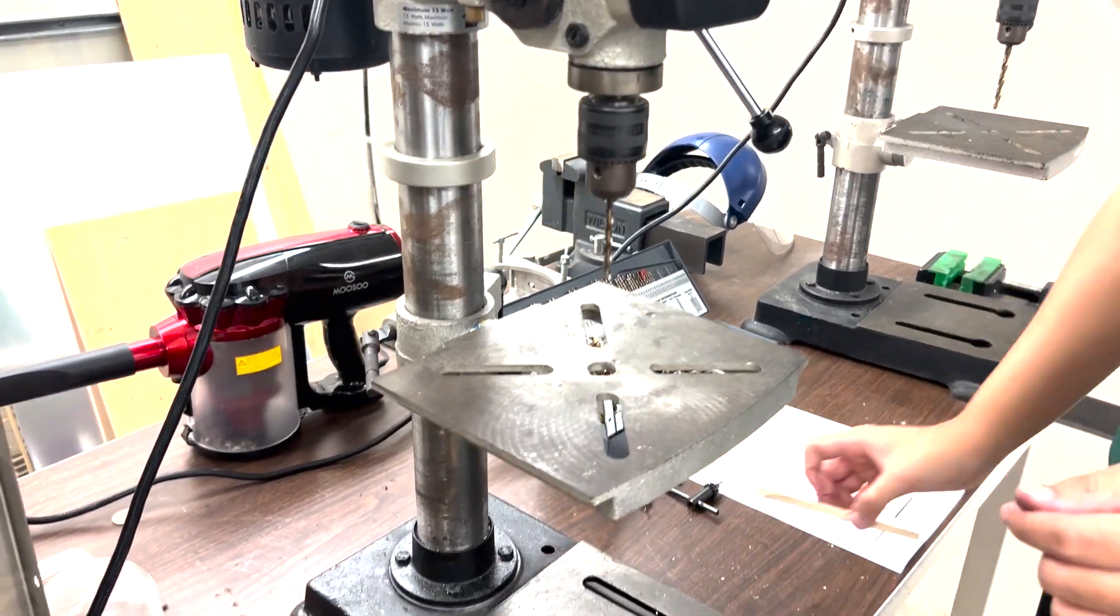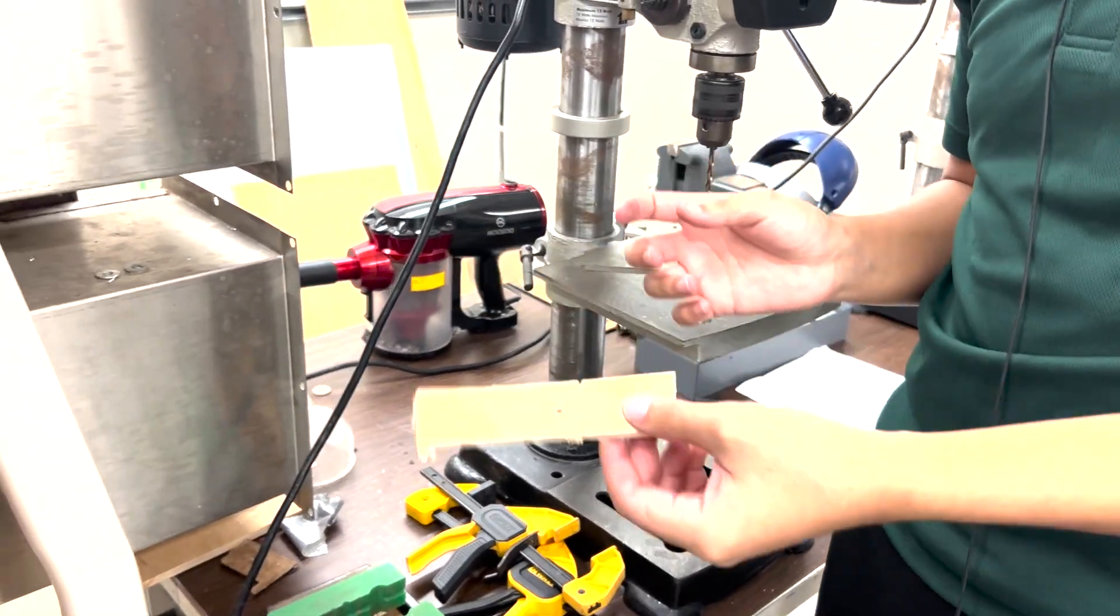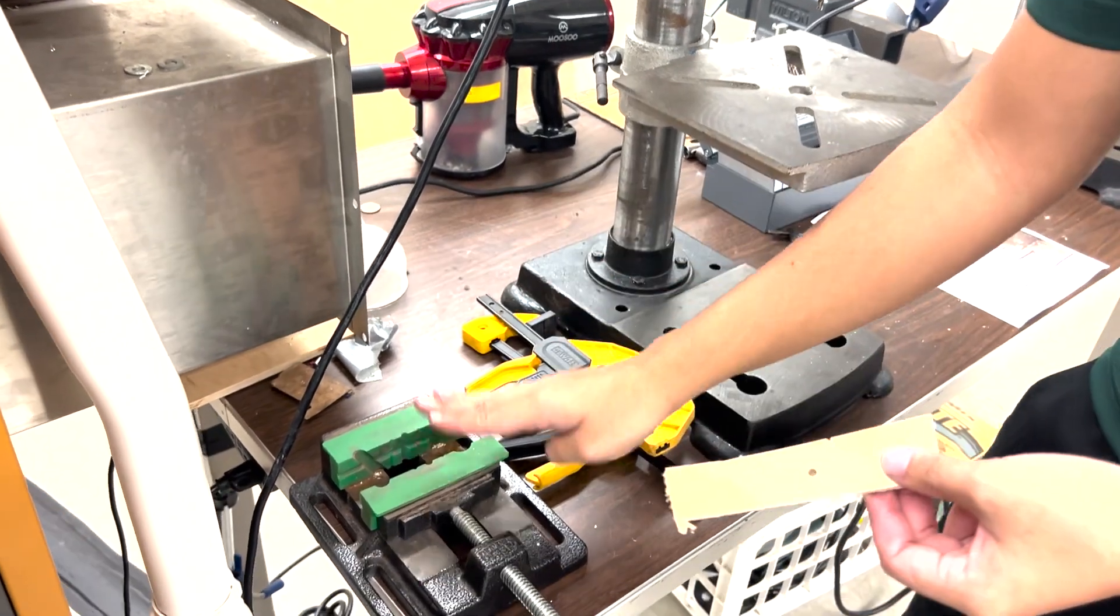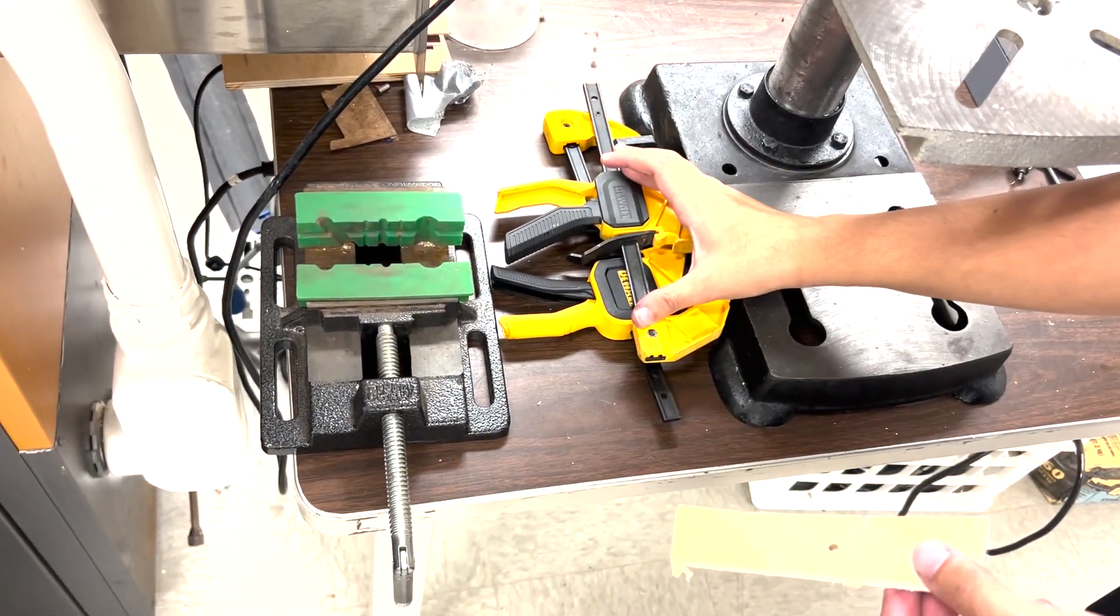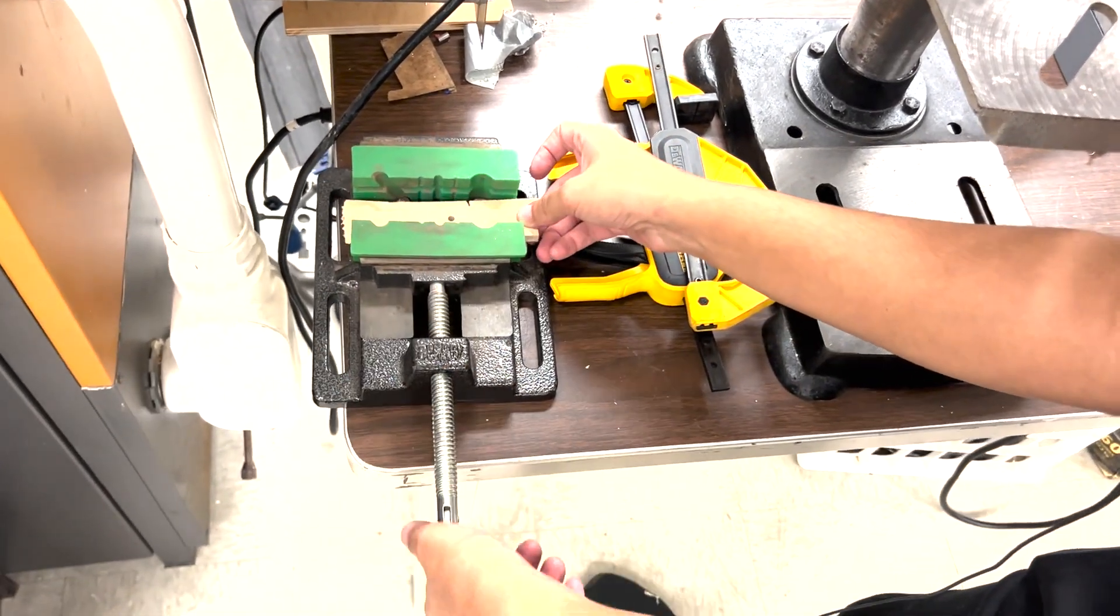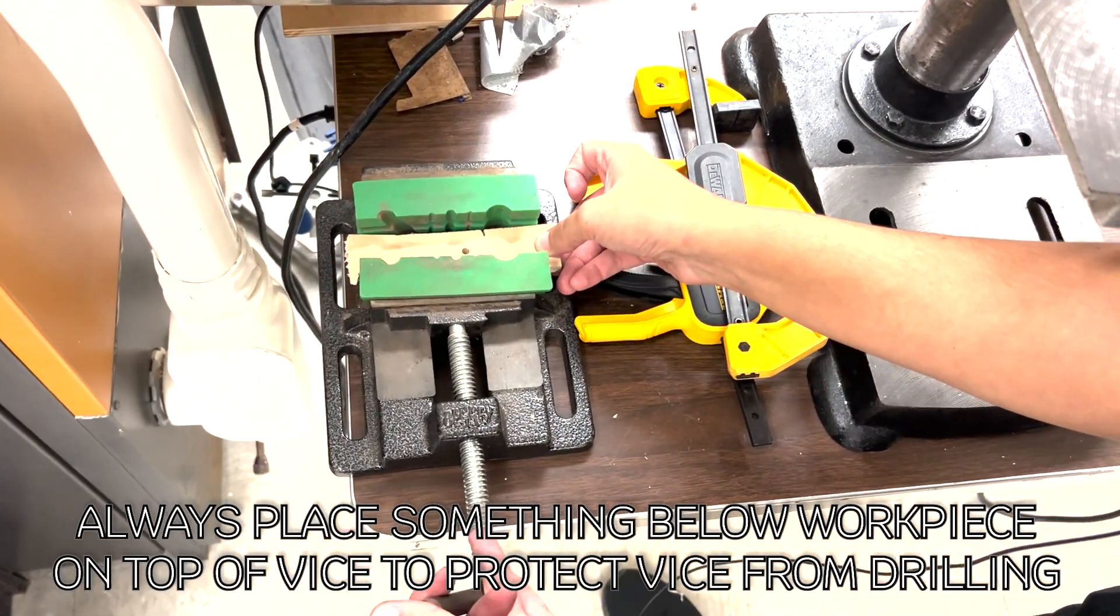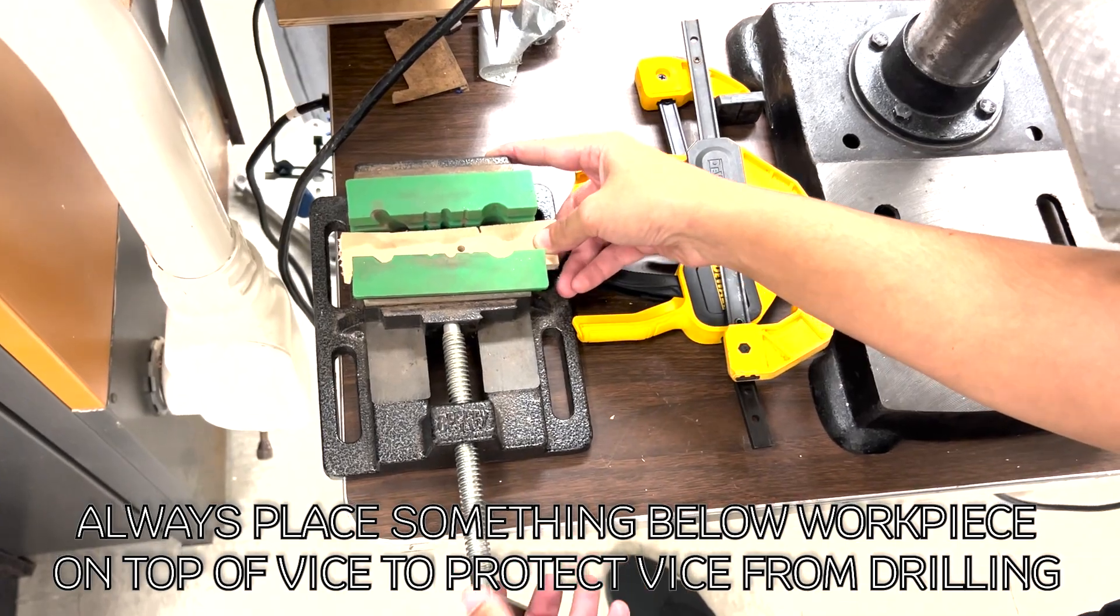Next, you grab your material. Since this is a smaller piece, you'll be using both the vise grip and the clamps. If you have a bigger piece, use the clamps. You want to place this in here and lock it into place like so.